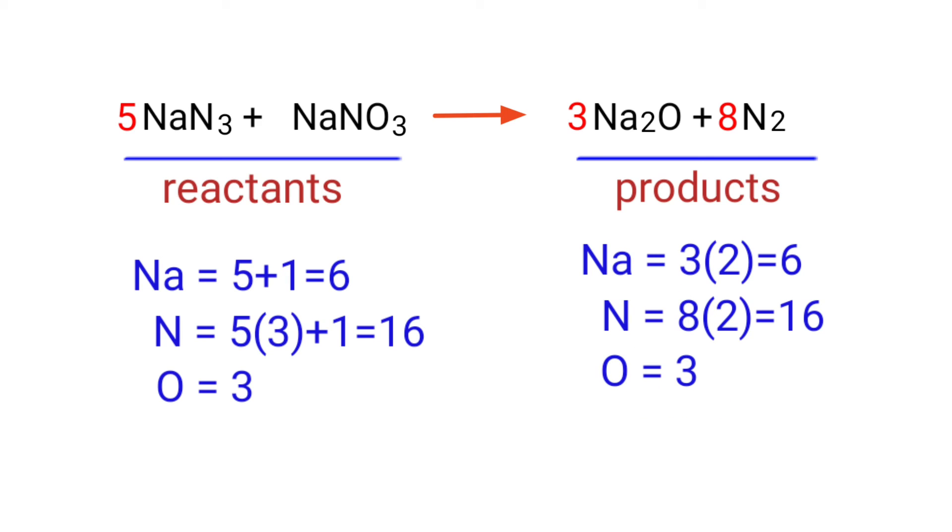The equation is now balanced. There are 6 sodium atoms, 16 nitrogen atoms, and 3 oxygen atoms on both sides.